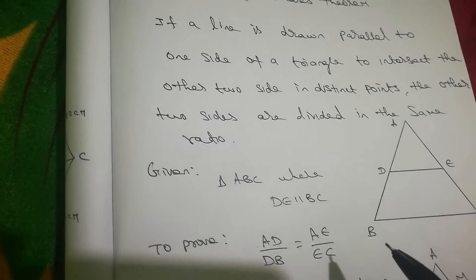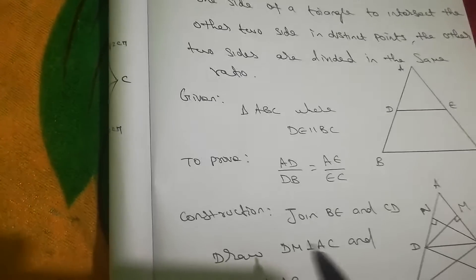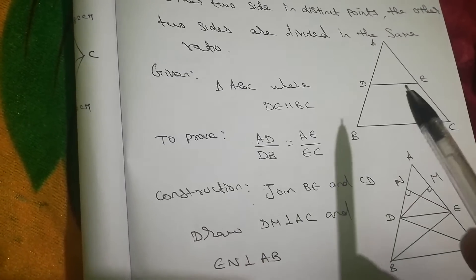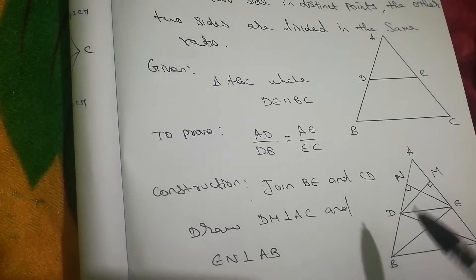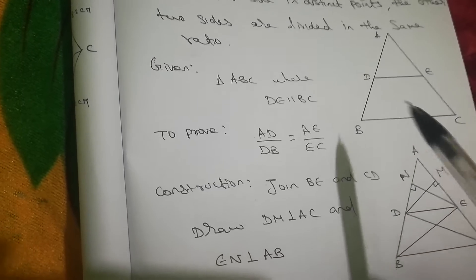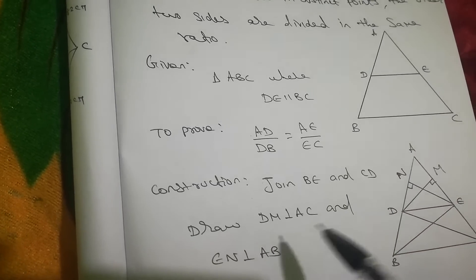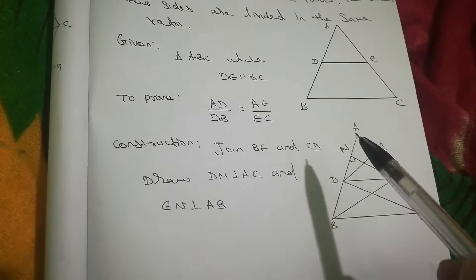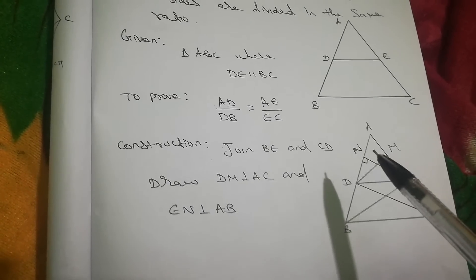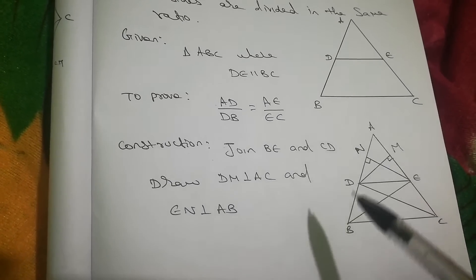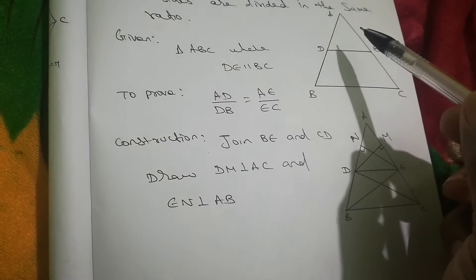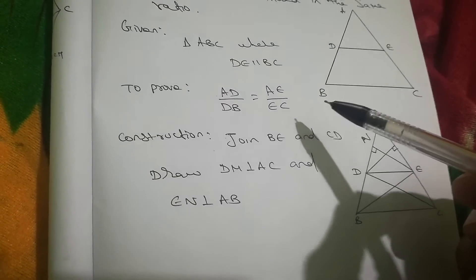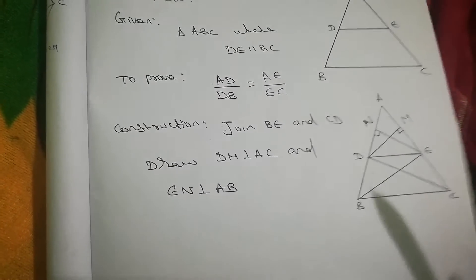Construction: Join BE and CD. Draw DM perpendicular to AC, and EN perpendicular to AB.